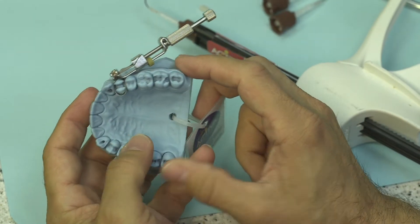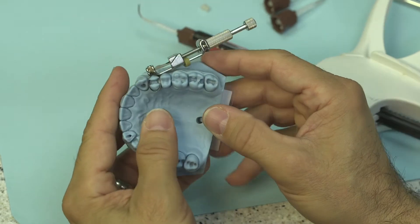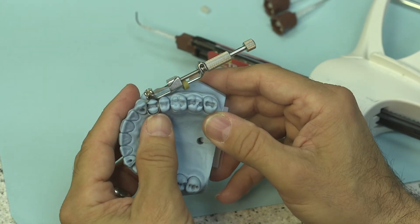Hey, we're going to do a class 2 restoration now. Now I'm using a traditional Toffelmeyer band and retainer.